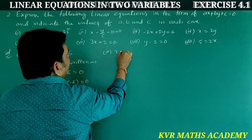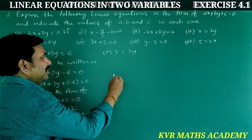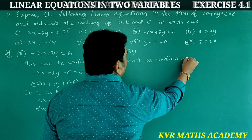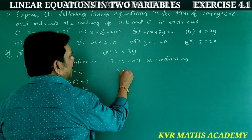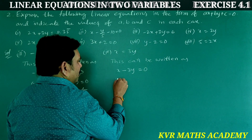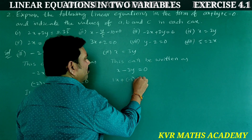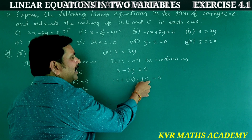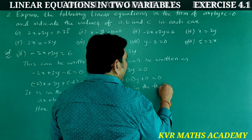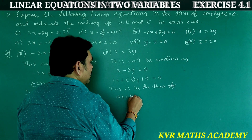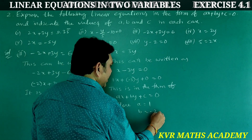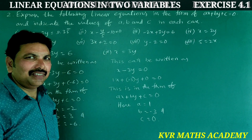Fourth: x = 3y. This can be written as x − 3y = 0, which in the form ax + by + c = 0 gives a = 1, b = −3, and c = 0.